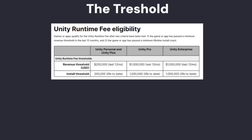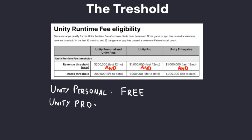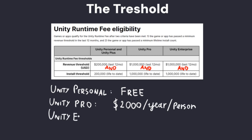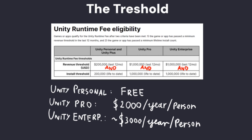The threshold is quite a simple concept. If you're using Unity Personal or Plus, the threshold is $200,000 yearly revenue and 200,000 lifetime installs. This changes to $1,000,000 revenue and 1,000,000 installs if you're using Unity Pro or Enterprise. Unity Pro costs $2,000 a year per person and Enterprise is around $3,000. Don't forget about those extra costs, because some people say if you get that much money you can just upgrade to Unity Pro, which might not be the case if you have a decently sized team such as 10 people.